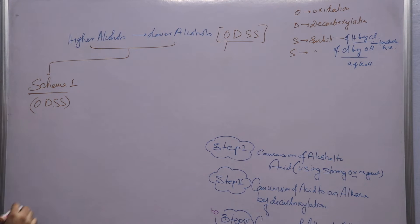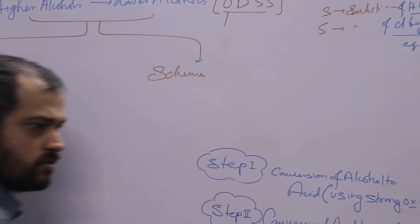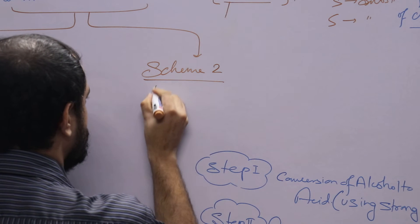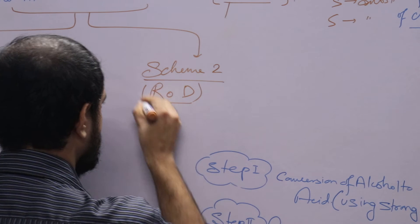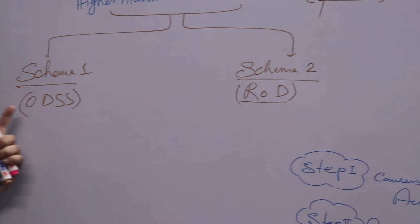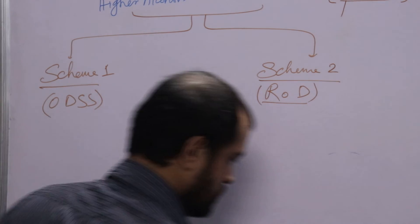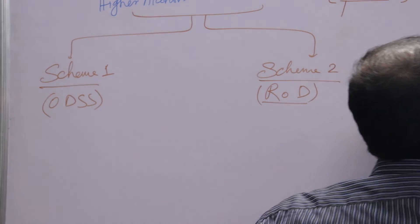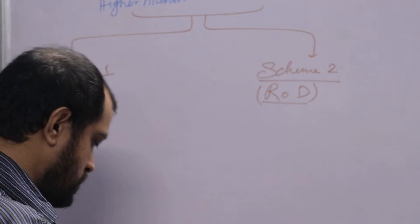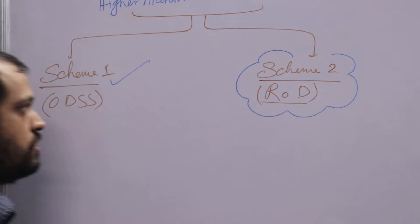There are two schemes. Scheme 1 — I actually discussed using the ODDS mnemonic. I do not prefer Scheme 2 because of some obvious reasons. But there is another scheme whose mnemonic is ROD. I will discuss this. This is the safest. We will discuss Scheme 2.